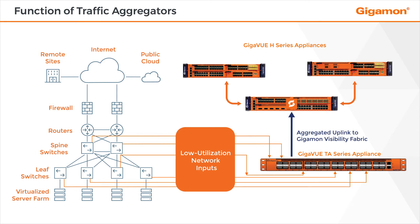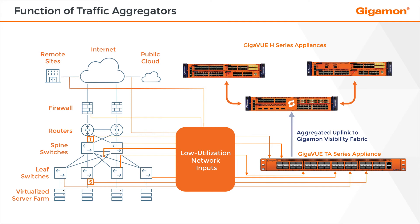Gigaview TA Series appliances help in monitoring traffic inside the network as well as on the edges. In particular, these appliances are very useful in monitoring low-utilization traffic found in peer-to-peer local traffic accessed through tap devices and switch port analyzer or SPAN configurations. The Gigaview TA Series aggregates this low-utilization traffic and makes it available to tools or the Gigamon visibility and analytics fabric for continuous monitoring and traffic forwarding.